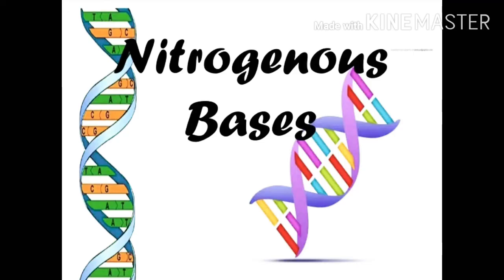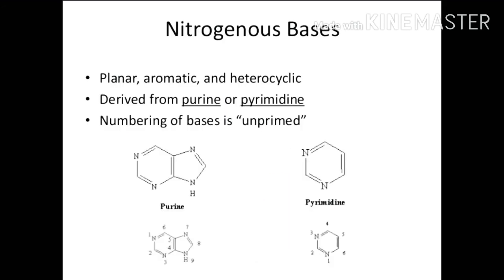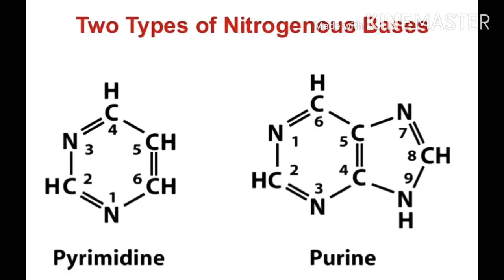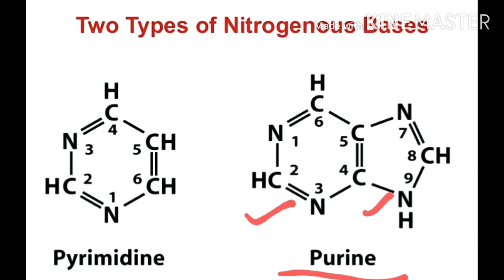Next are nitrogenous bases. Nitrogenous bases are heterocyclic structures — they are made up of cyclic structures which contain atoms of two different elements: carbon and nitrogen. These nitrogenous bases are of two types: purines and pyrimidines. Purines are two-carbon-nitrogen ring bases, meaning they have two rings made of carbon and nitrogen.